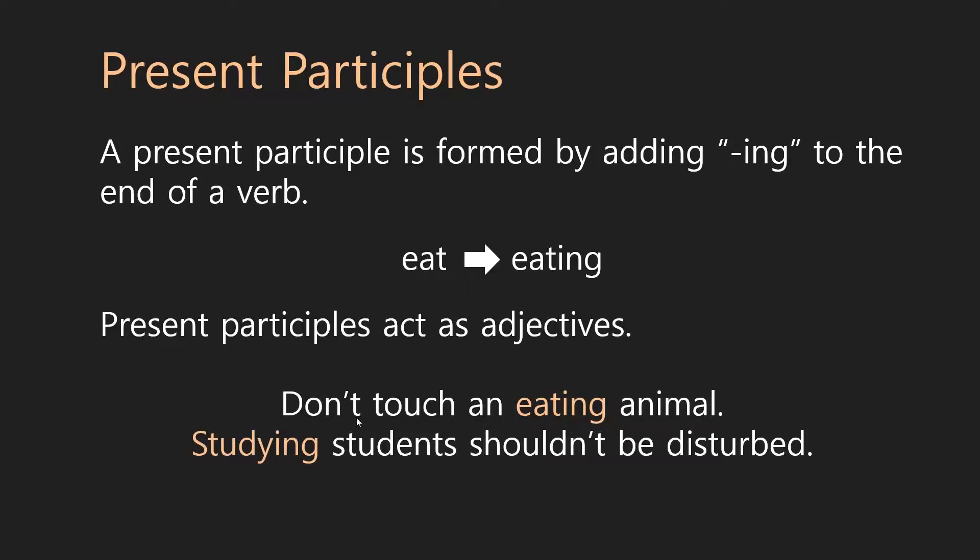Some examples here would be, don't touch an eating animal. Not a sleeping animal, not a friendly animal, but an eating animal. Don't touch an eating animal. Or, studying students shouldn't be disturbed. Here, the main sentence is students shouldn't be disturbed. But I'm just saying what kind of students? Not sleeping students, not lazy students, but studying students. Studying students shouldn't be disturbed. Why? Because they're studying. Studying describes the students. Eating describes the animal. Okay. So, those are present participles.